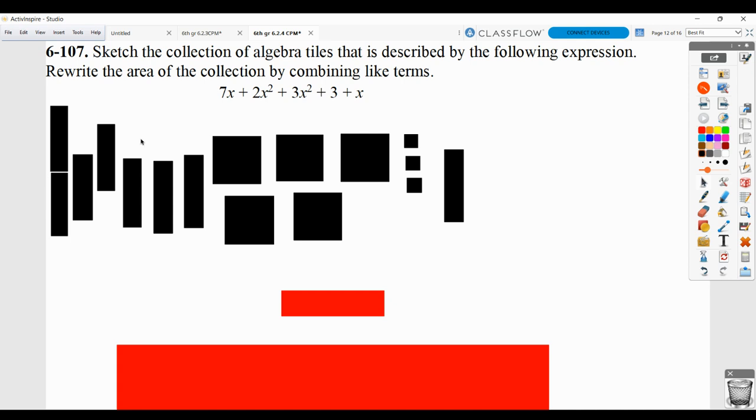So when we combine our like terms, we have 2 of these x squared tiles plus 3 of these x squared tiles. So that makes 5 x squared tiles. We have 7 x tiles plus another x tile. So that makes 8 x tiles. And then we've got those 3 unit tiles. And we typically put our answers in this order. So we call this the highest degree of x and then working our way down. So x to the second power, that term will be first, then the x term, then the unit term, if we have them.